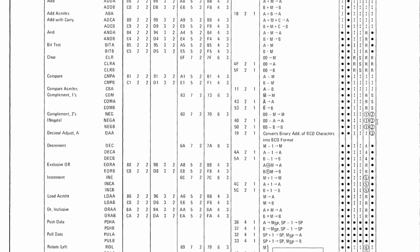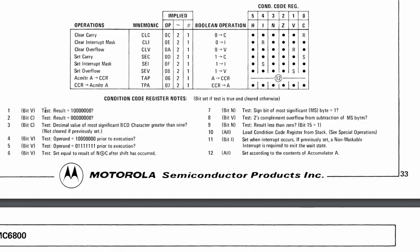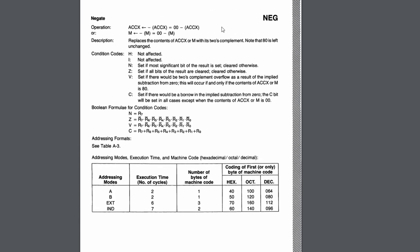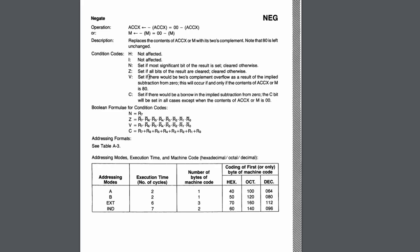You can see over by the flags that N and Z are changed, and V has note one, and C has note two. Now if we look at those notes, we can see that the overflow flag should be set if the result is hex 80, and the C flag should test whether the result is zero. If we go to the programming manual and look at the instruction description for negate, we can see that the overflow is set if there would be two's complement overflow as a result of the implied subtraction from zero. So the ALU is going to do zero minus the accumulator, and whatever the overflow flag is, is whatever it is.